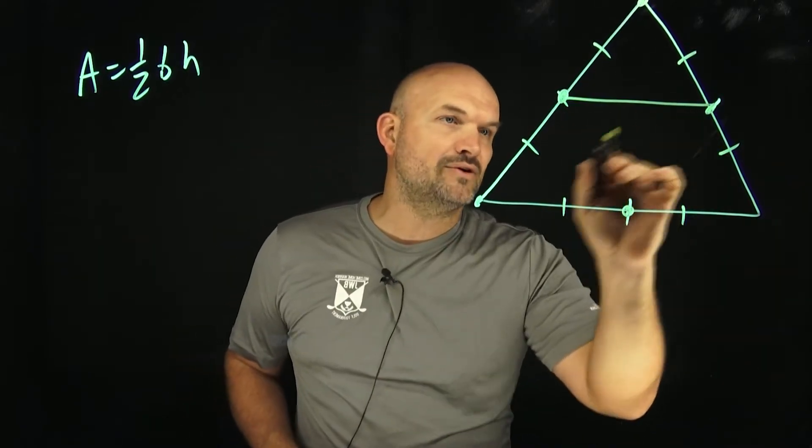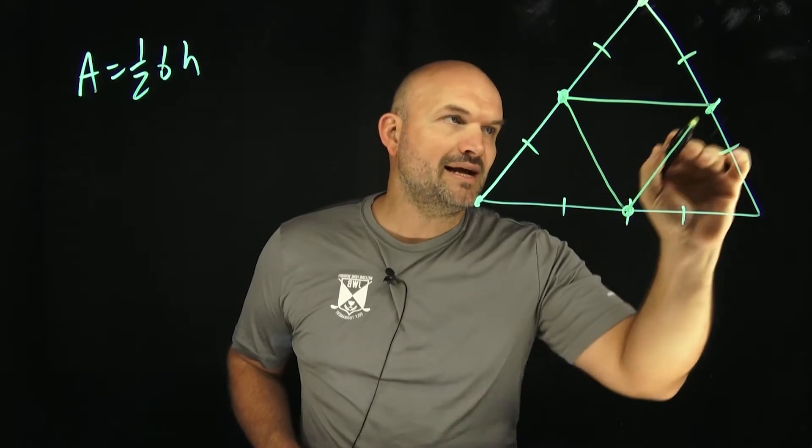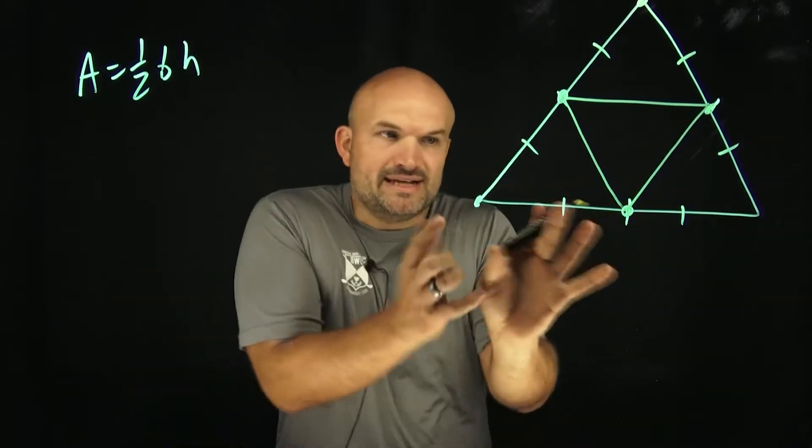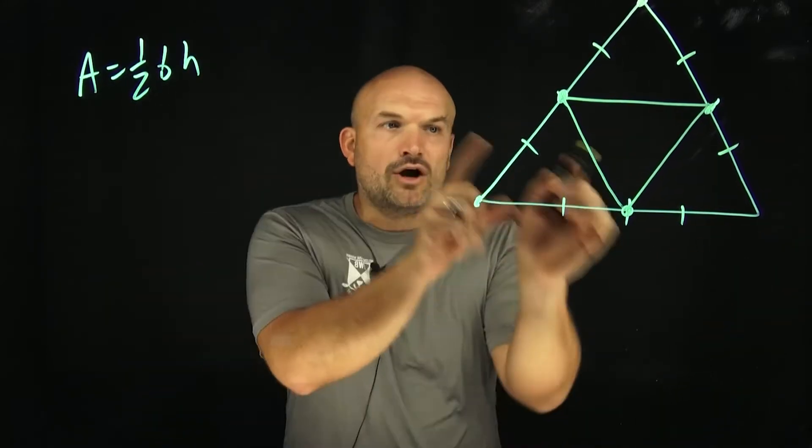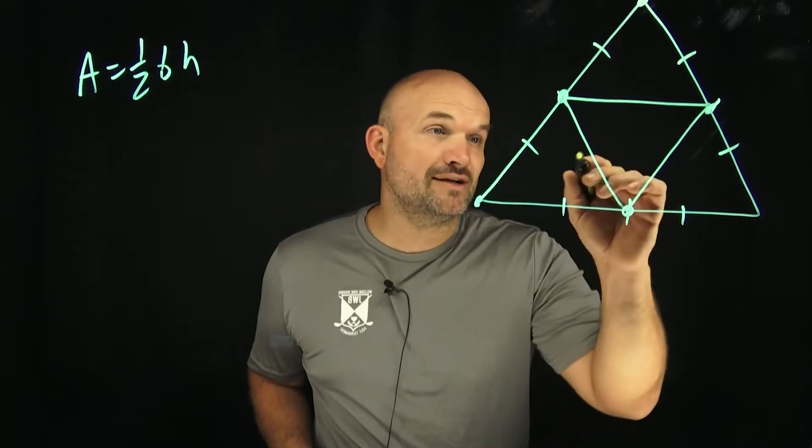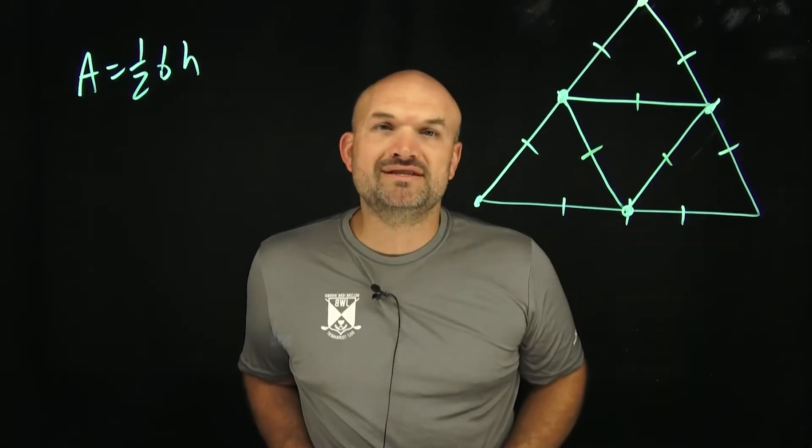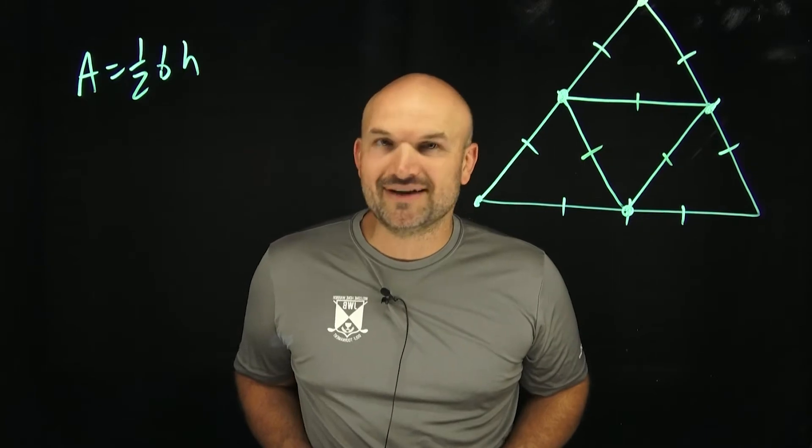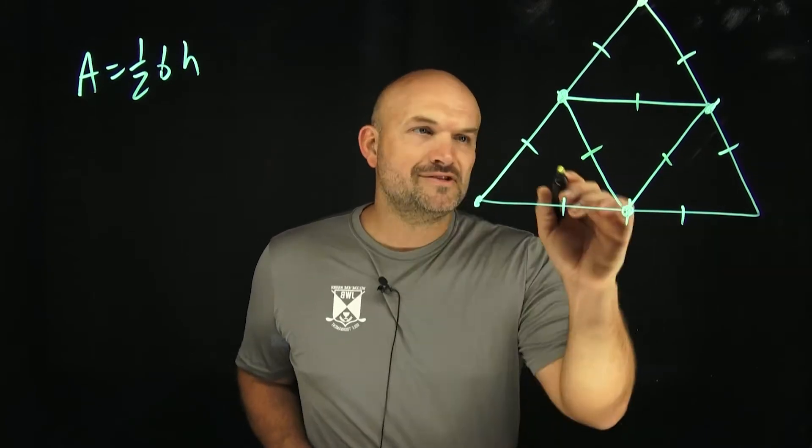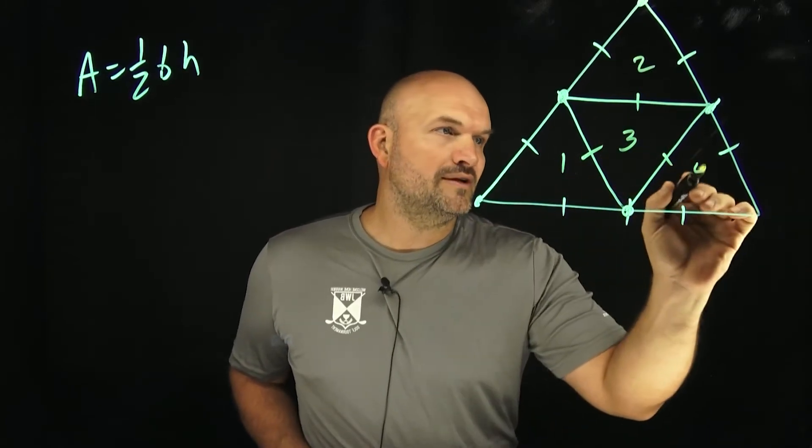Well, if I take these three midpoints and I now go and connect them, what I want you to recognize here is no matter what the measurement of the sides were going to be, they're all going to create what we call equilateral triangles. So therefore they're all going to be congruent. And if they're going to be congruent triangles, guess what? They're going to have the same area. So I have one, two, three, four.